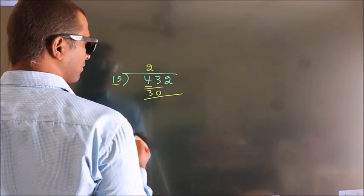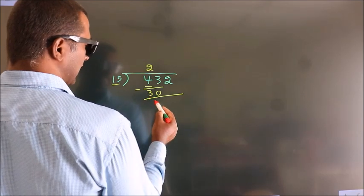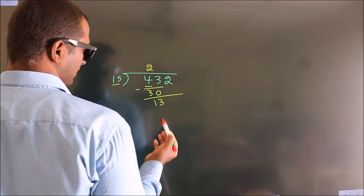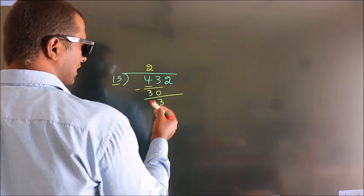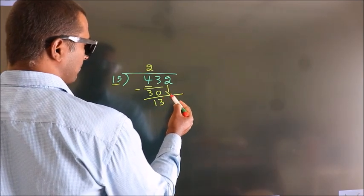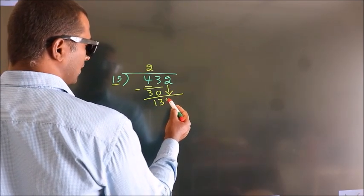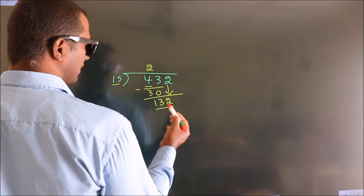Now we should subtract. We get 13. After this, bring down the beside number. So 2 down, making 132.